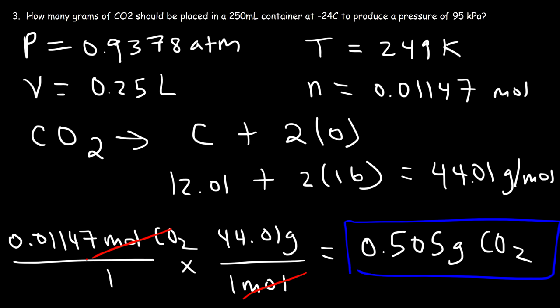So if you need to use the ideal gas law equation and you need to calculate the number of grams of a substance, find the moles first and then convert it to grams. Or if you're given the number of grams and you've got to find like the pressure or volume or temperature, convert the grams into moles, then plug it into the formula PV equals nRT, and then just solve for the missing variable that you're looking for.